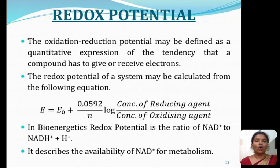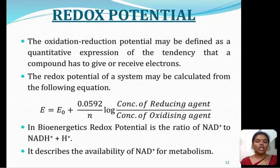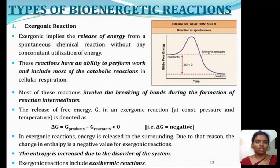Next we will see about redox potential. The oxidation-reduction potential may be defined as the quantitative expression of the tendency that a compound has to give or receive electrons. The redox potential of a system may be calculated by the equation: E equals E-naught plus 0.0592 divided by N, multiplied by the log of the concentration of the reducing agent over the concentration of the oxidizing agent. In bioanalytics, redox potential is the ratio of NAD+ to NADH + H+, and it describes the availability of NAD+ for metabolism.